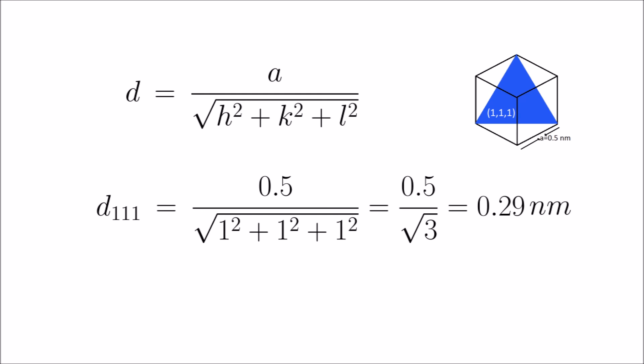That is approximately 0.29 nanometer. So, the distance between two adjacent 111 planes is 0.29 nanometer.